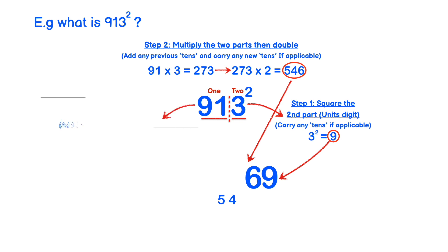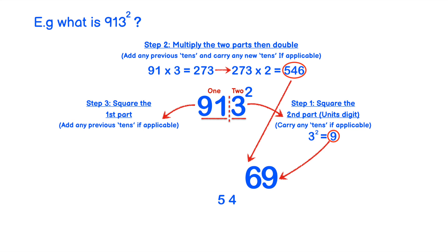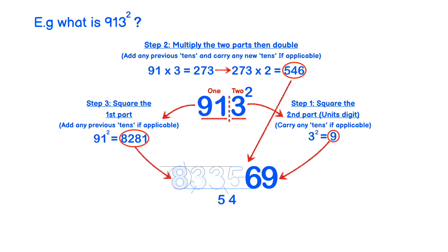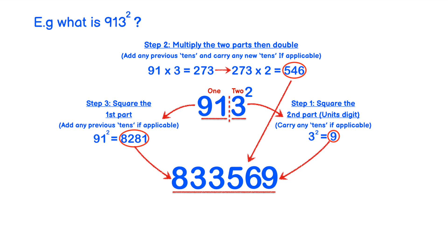In step 3, we square the first section. In this case we have 91. Using the same technique, 91 squared becomes 8281. Adding 54 from before gives us 8335. So the final answer becomes 833569.